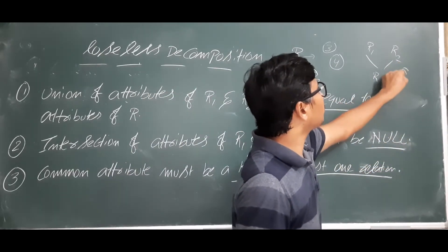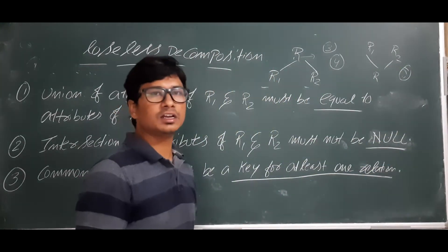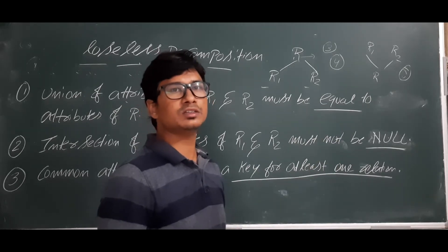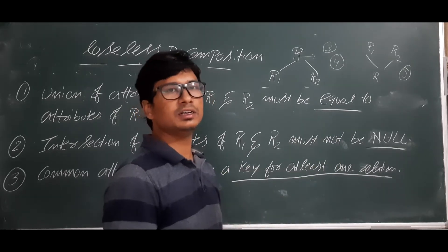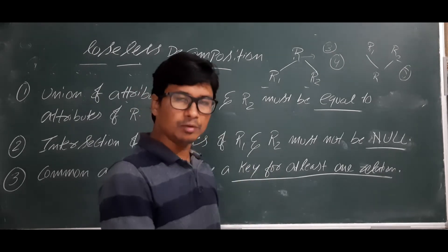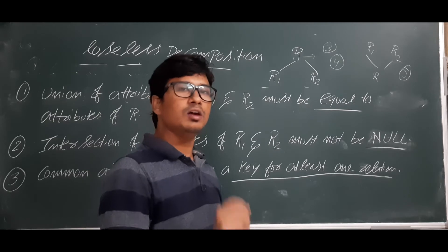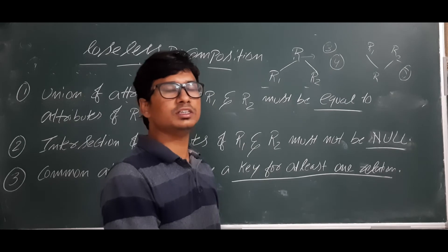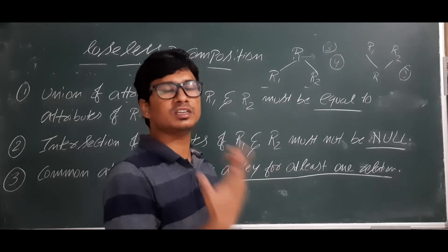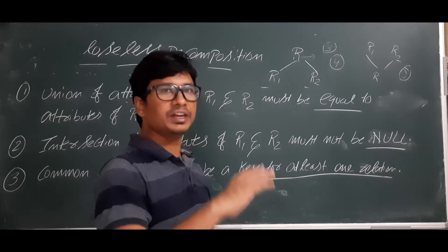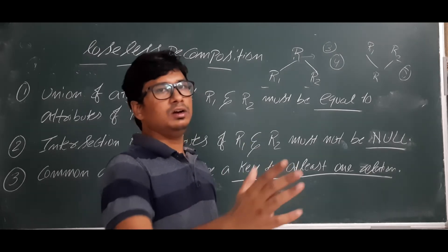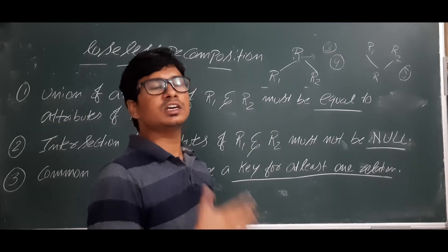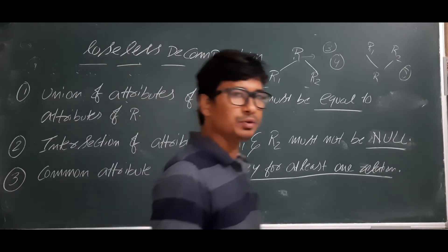But suppose after decomposing and again applying the join you got five tuples — you got one extra tuple. You might say we are gaining, so why call it lossy? After decomposing and then joining, we should not get more or less tuples. If we get more we call it lossy decomposition, if we get less we also call it lossy decomposition. If we get exactly the same number of tuples and the same attributes, then we say it is a lossless decomposition.